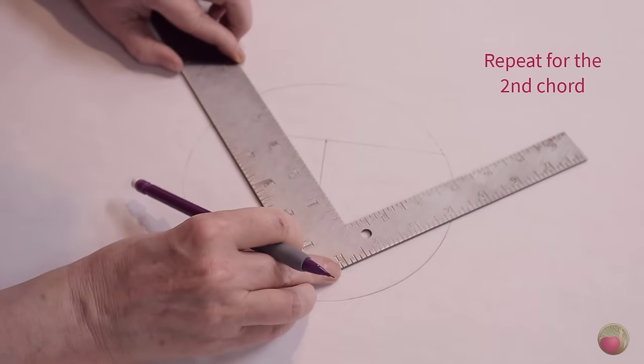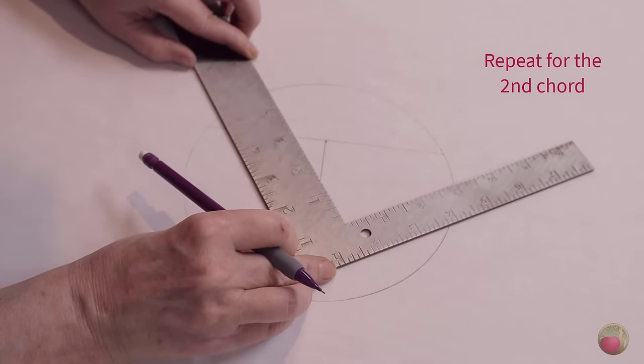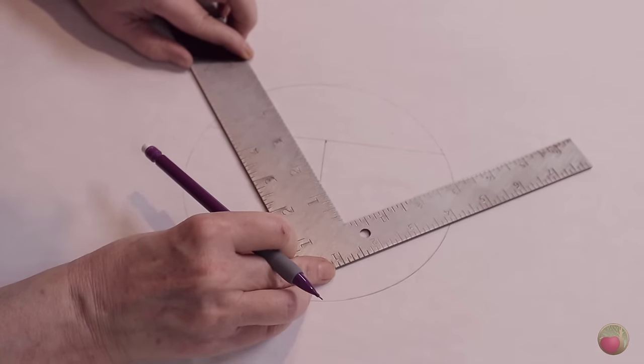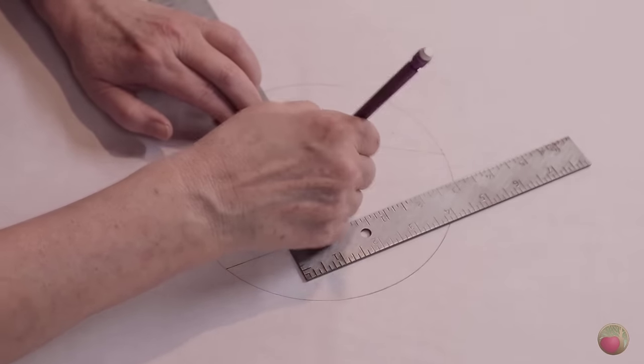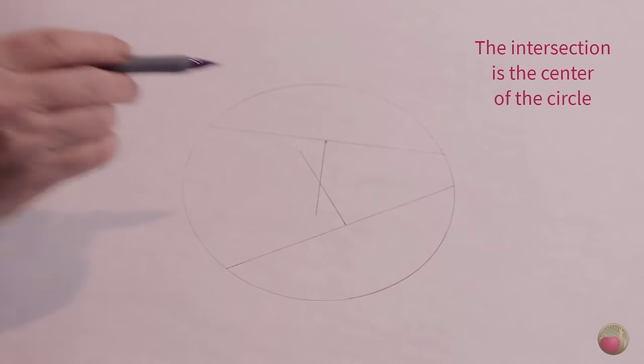Then we'll do this one. Get it all lined up here. There's our midpoint. Draw straight through it and that is the center of our circle.